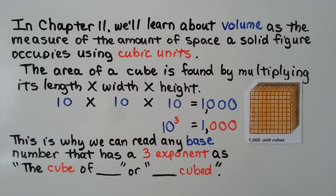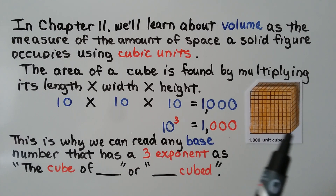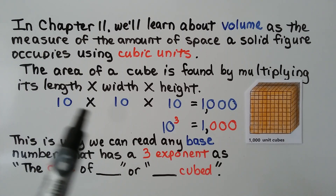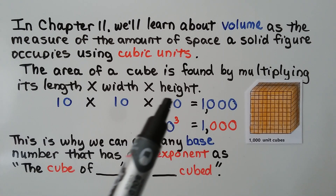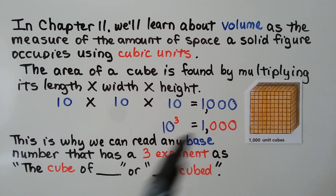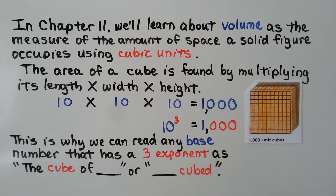Now we're finishing chapter 1 in 5th grade math, but in chapter 11 we'll learn about volume — the measure of the amount of space a solid figure occupies using cubic units. The volume of a cube is found by multiplying its length times its width times its height. So with 10 cubes across, 10 cubes for height, and 10 cubes going back, we multiply 10 times 10 times 10 — that's 1,000 unit cubes. Because we have 3 factors of 10, we can write it as 10 to the 3rd power. This is why any base number with a 3 exponent is read as the cube of that number or that number cubed — so this is the cube of 10 or 10 cubed, which is also 10 to the 3rd power.